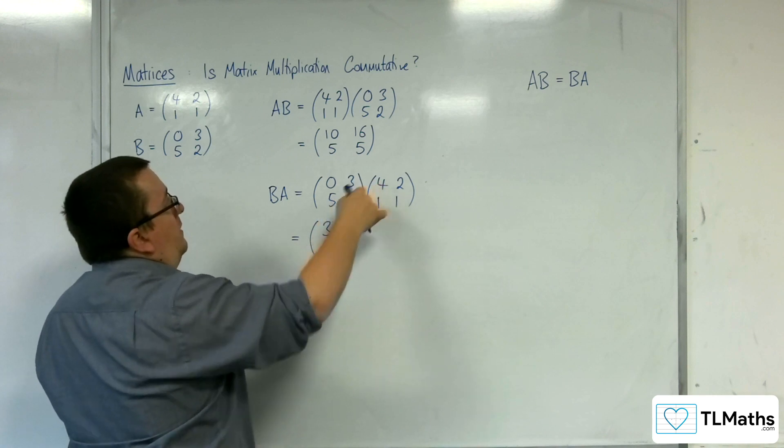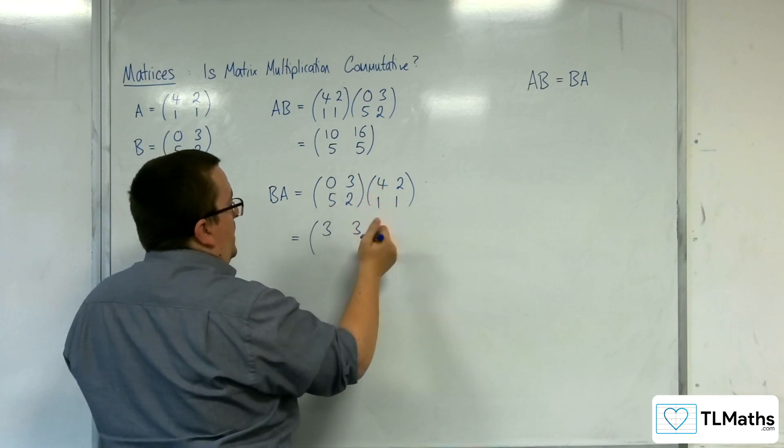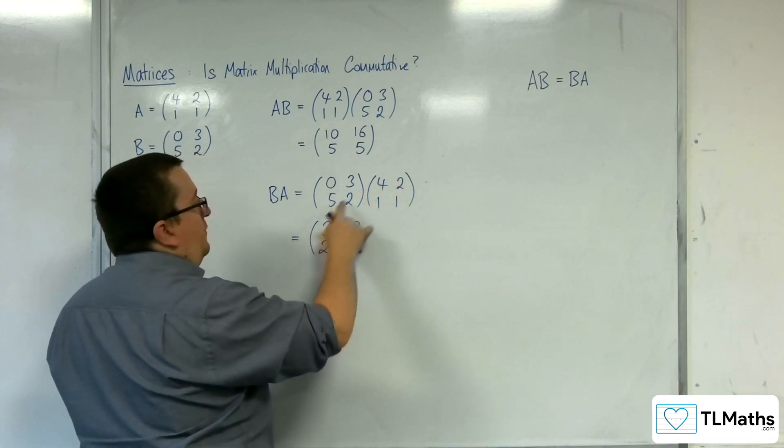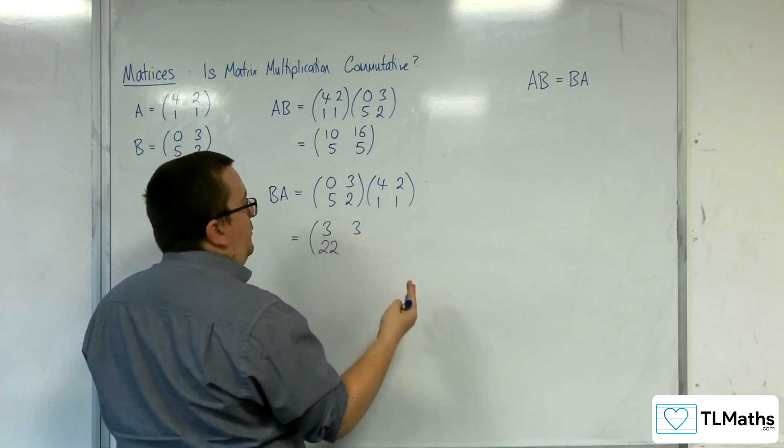5,2 with 4,1. So 5 lots of 4 is 20, 2 lots of 1 is 2, so 20 plus 2 is 22. 5,2 with the 2,1. So 5 lots of 2 is 10, 2 lots of 1 is 2, 10 plus 2 is 12.